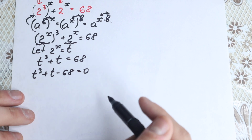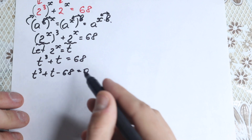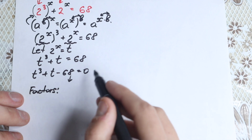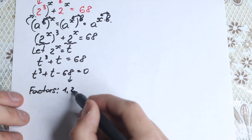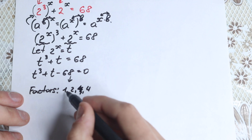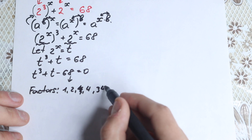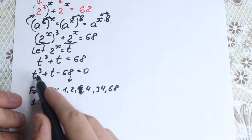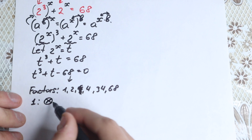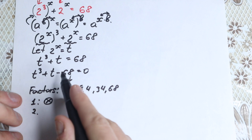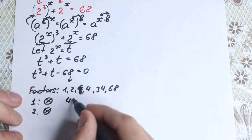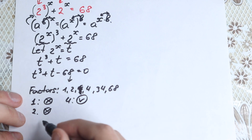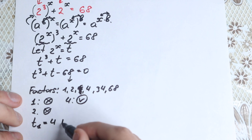There are a lot of approaches to solve this cubic equation. I'll show an approach using factors. Let's test positive factors of 68: 1, 2, 4, 34, 68. Testing t=1: 1 + 1 - 68 ≠ 0, rejected. Testing t=2: 8 + 2 - 68 ≠ 0, rejected. Testing t=4: 64 + 4 = 68. That works! So t = 4 is a factor, meaning (t - 4) is a factor.